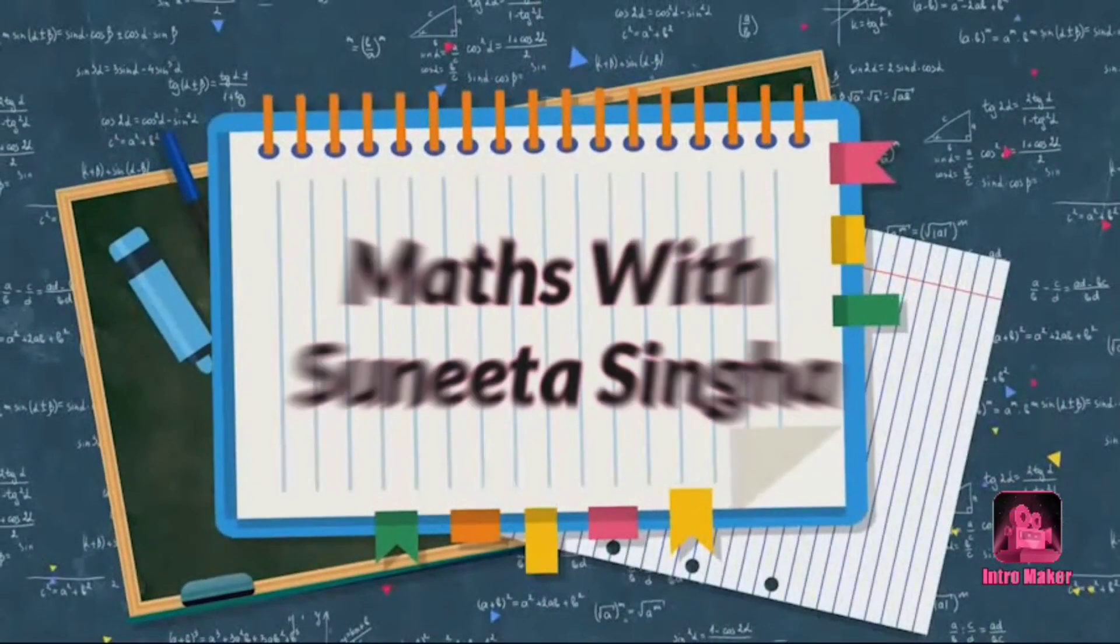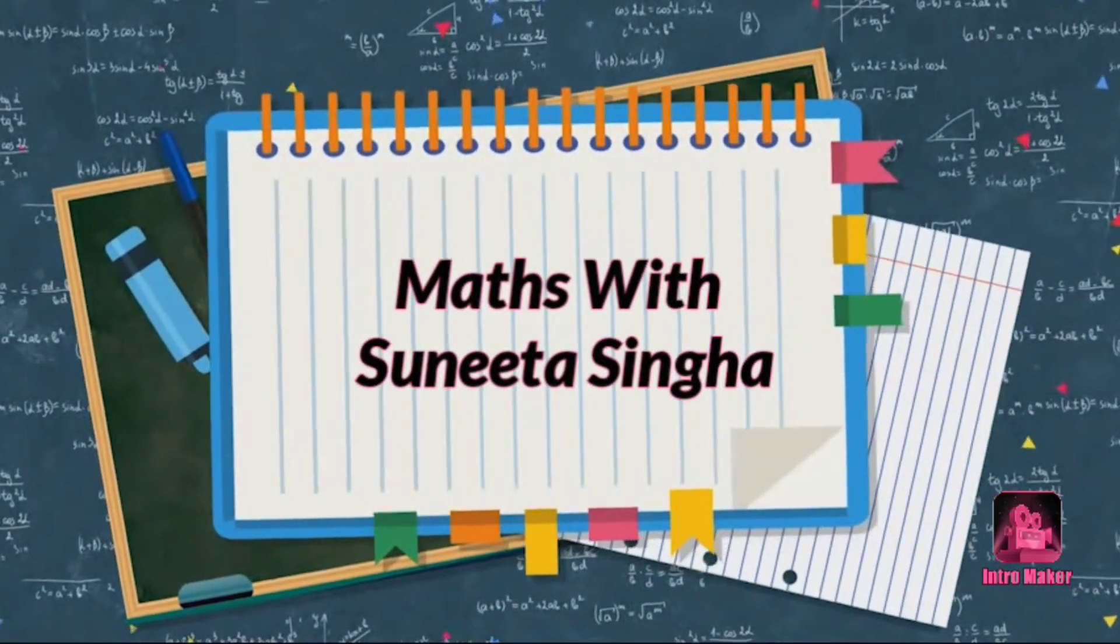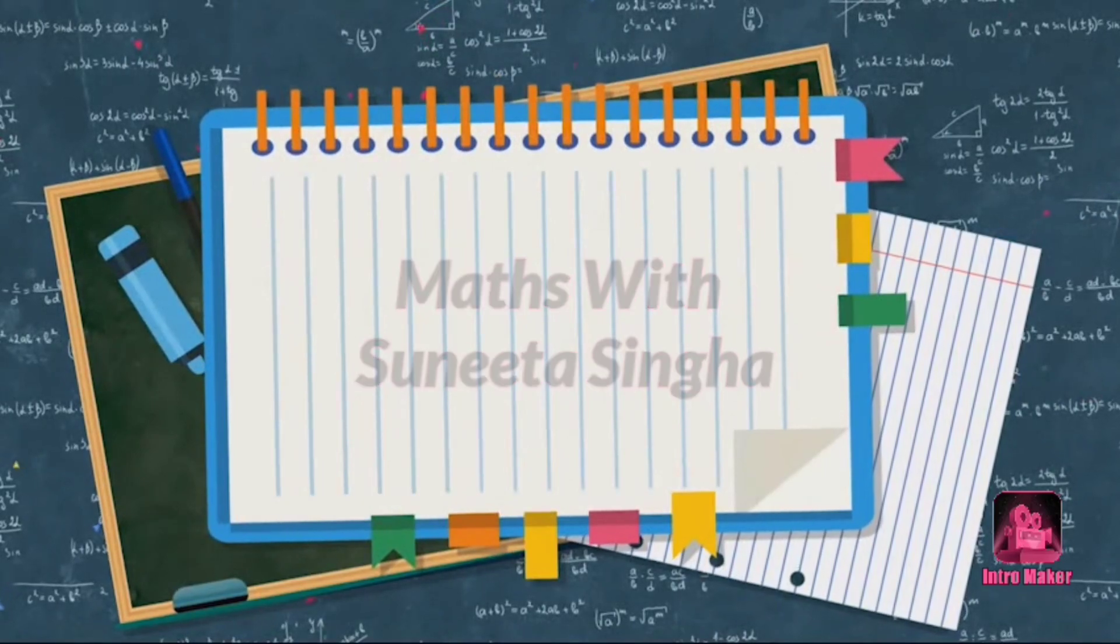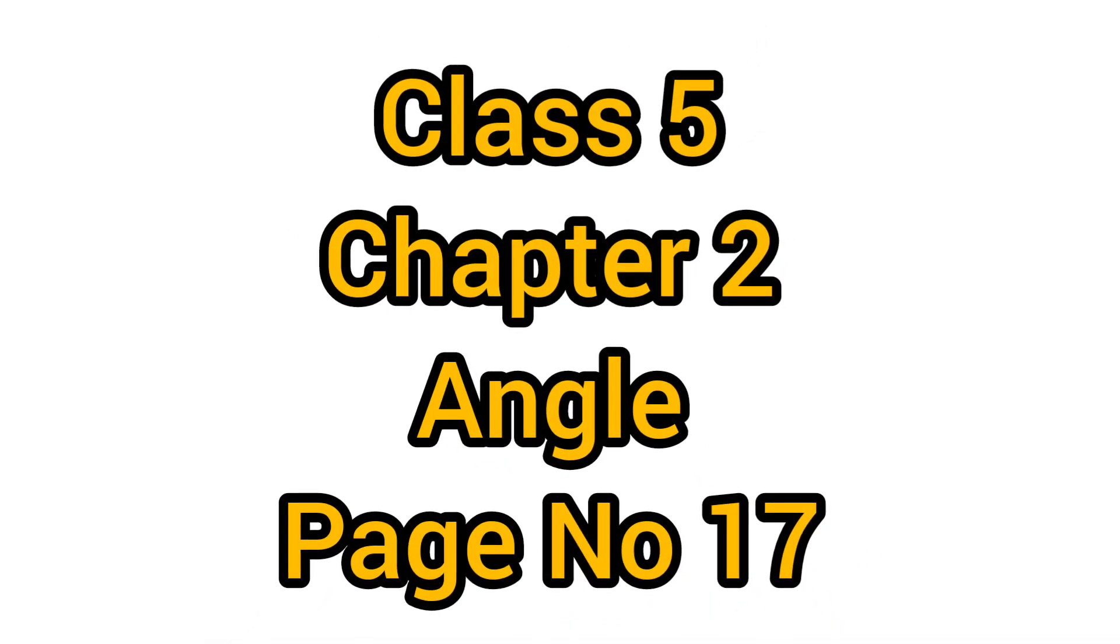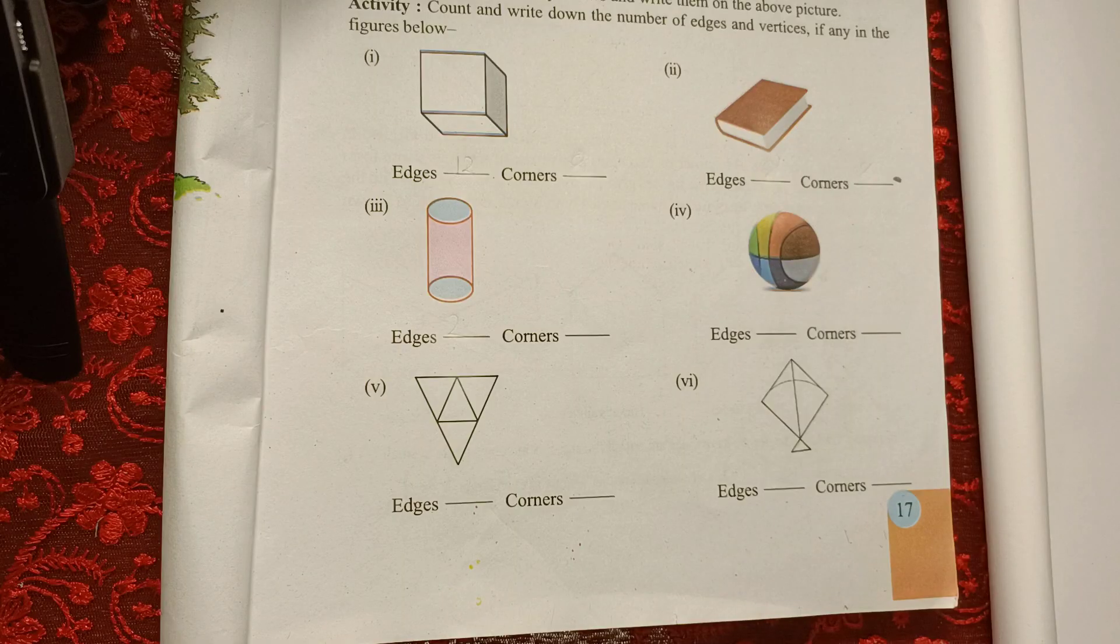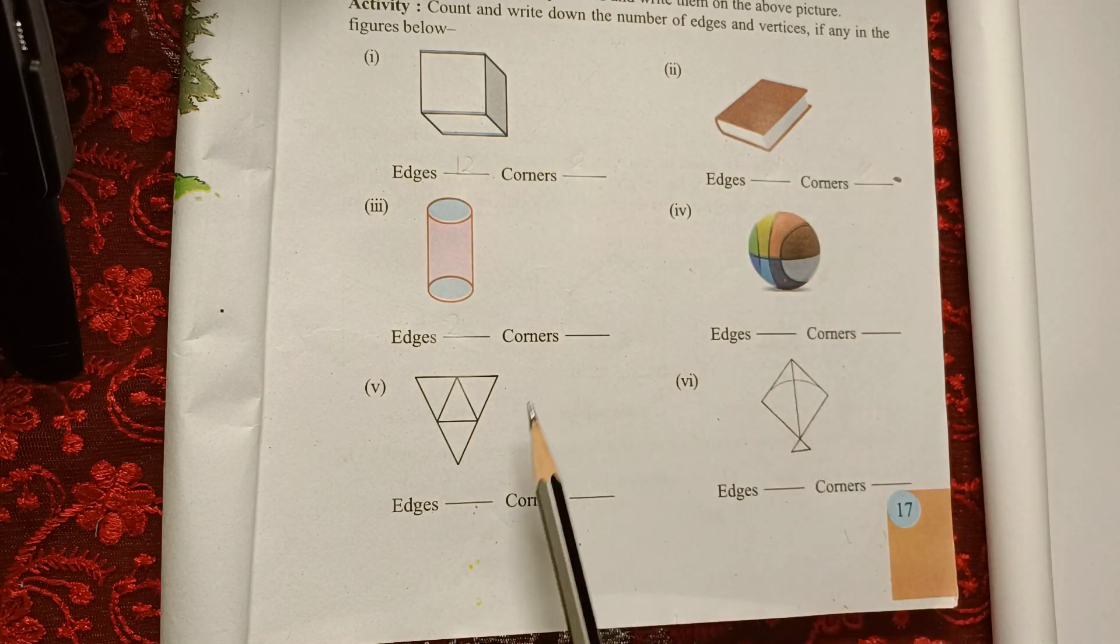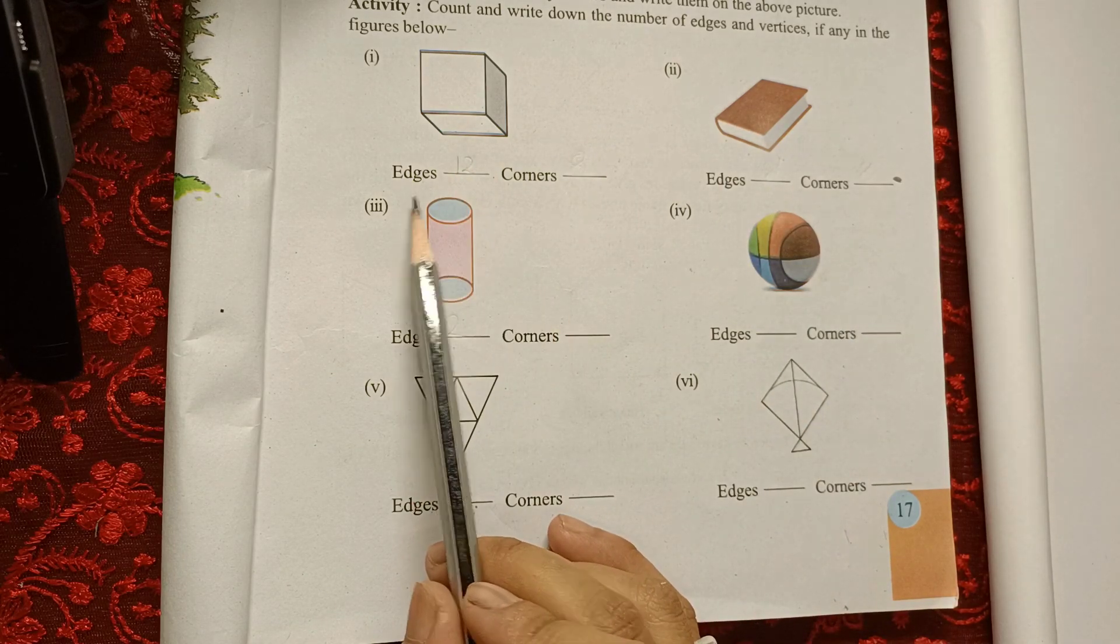Dear all, welcome back to my channel. Today's topic is from class 5, chapter 2: angles. I'm going to solve page number 17. From the given figures, we have to find out the edges and corners, how many edges and corners are there.